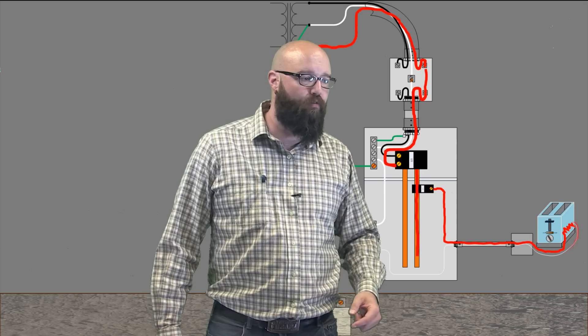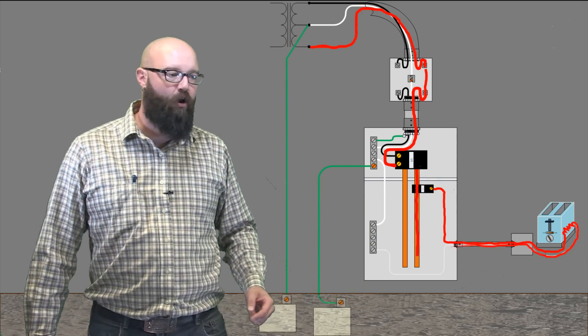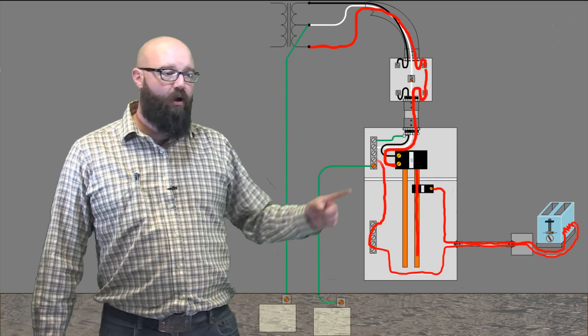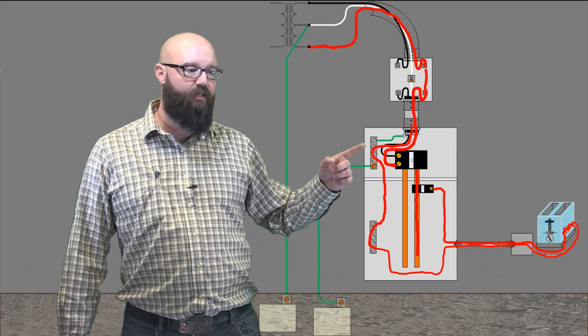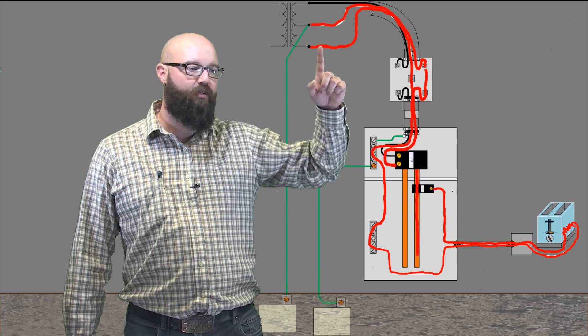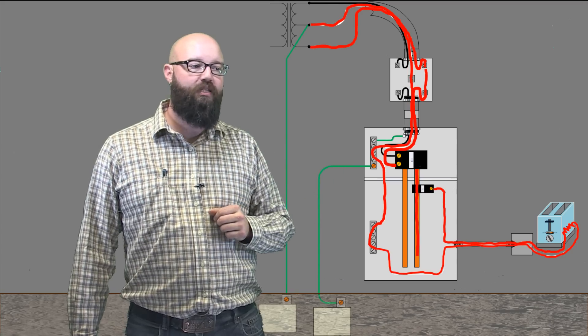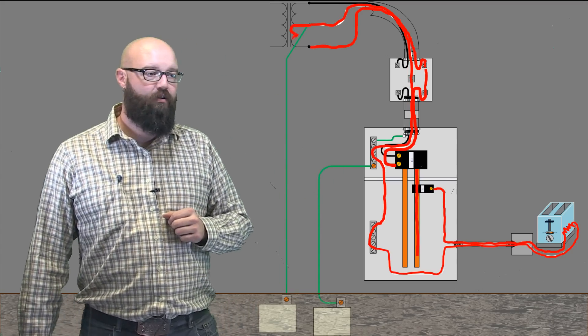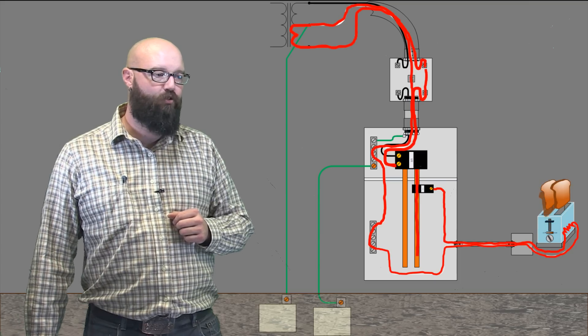Current flows through our load and returns back on our identified conductor, where it makes its way across the grounding bar, back up the neutral, back to this point on the transformer, where it completes that path, and we now have toast.